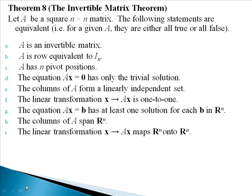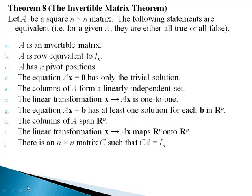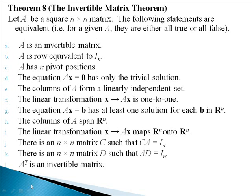I: the linear transformation from x to Ax maps Rn onto Rn. J: there is an n by n matrix C such that when I multiply A on the left by C, I will get the identity. K: there is an n by n matrix D such that when I multiply A on the right by D, I'll get the identity. And L: the transpose of A is an invertible matrix.